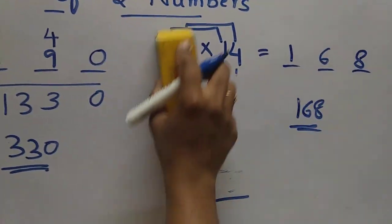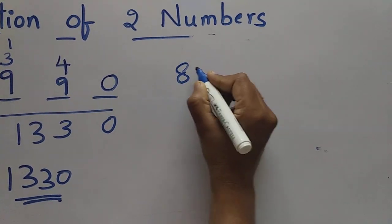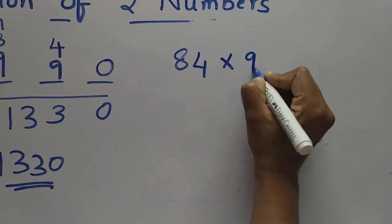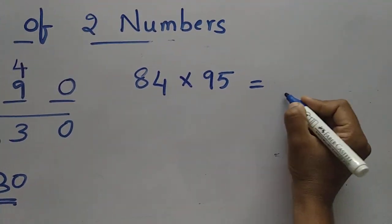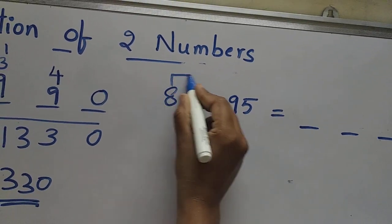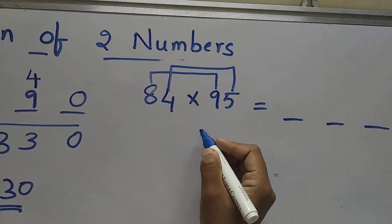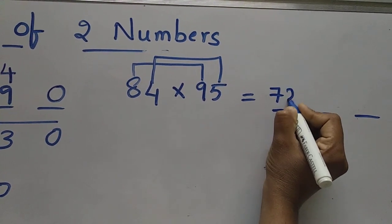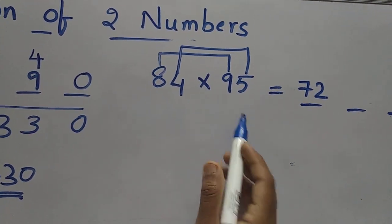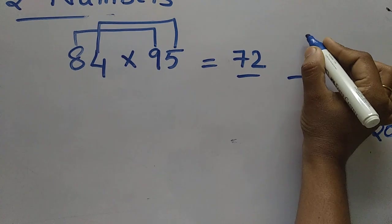After that we can move to one more example. Now we can take the big numbers — that is 84 into 95. Same, we can take 3 blanks here. We can multiply 8 into 9 and 4 into 5. 8 into 9 is 72, write 72 here. And 4 into 5 is 20. For this 20 we can write 0 here and take 2 as a carry.